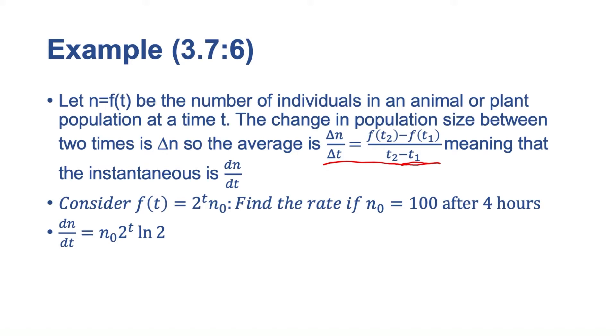Okay, that's our derivative. And now they're telling us to plug in 100 for n0 and after 4 hours, so t equals 4. So that means that we are going to get dn dt evaluated at t equals 4, and that will be 100 times 2 to the 4th natural log of 2. And that's 1600 natural log of 2. And of course, we're going to be using a calculator here, and we'll just approximate that to 1109. And that is our final answer.